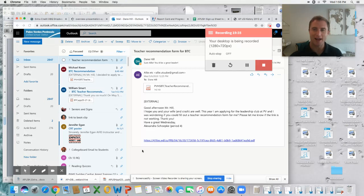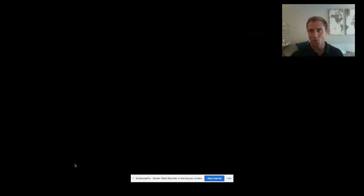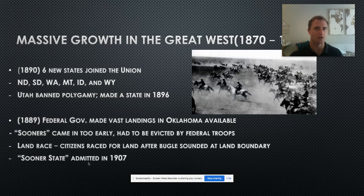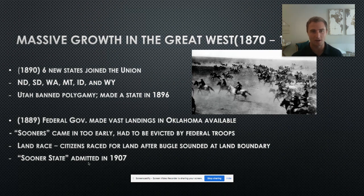By 1890, we have six new states joining the Union: North Dakota, South Dakota, Washington, Montana, Idaho, and Wyoming. Utah had been populated for far longer but finally banned polygamy and became a state in 1896.